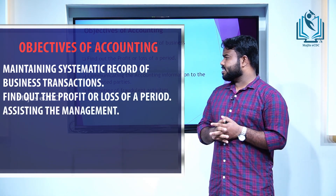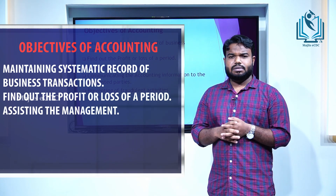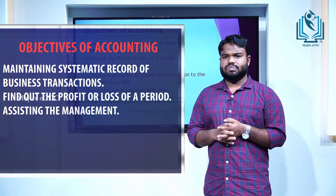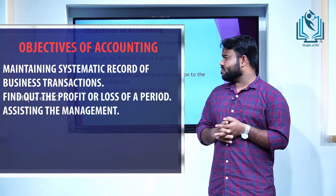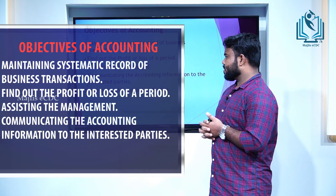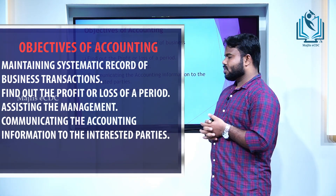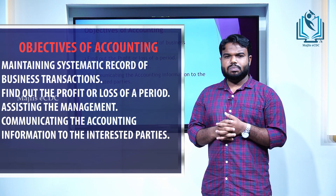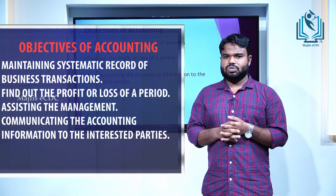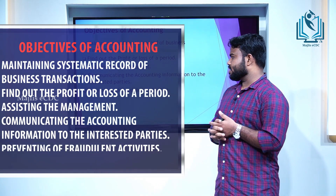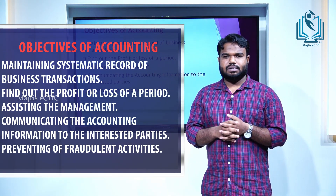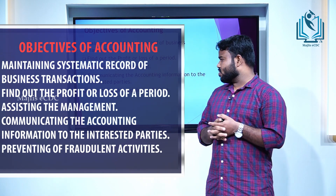The third objective is assisting the management. Management are the team or persons who are working for the result of an organization. For their better performance, accounting can facilitate the information at the right time. The next objective is communicating the accounting information to the interested parties — all people who are waiting for the result of an organization. Accounting can provide the information to these parties at the right time. Then, the next one is preventing fraudulent activities. A systematic process can avoid maximum chances of fraudulent activities.